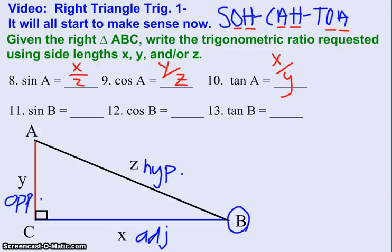So now it shouldn't be too bad to answer questions 11, 12, and 13. Problem 11, the sine of B. So from the perspective of angle B, sine again is opposite over hypotenuse, so it is going to be Y over Z.